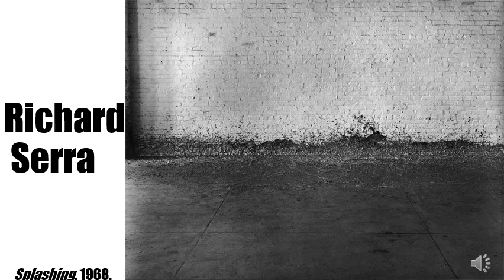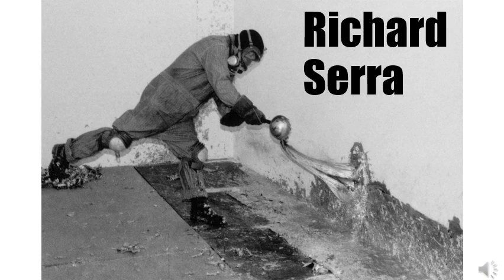Richard Serra was another artist for whom process outweighed the final product. In this piece, Splashing, we can see the way in which he threw molten lead into the seam between the wall and the floor of Leo Castelli's warehouse for Morris' exhibition, Nine at Leo Castelli. This exhibition blurred the line between the artist's studio and the gallery by presenting work to the public that either was site-specific like Serra's piece or which resulted in no end piece.